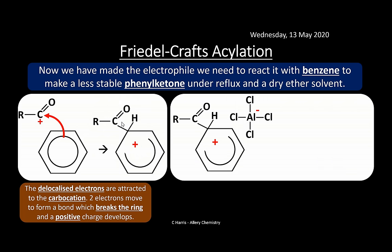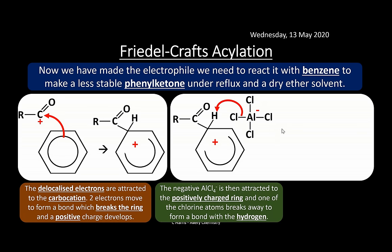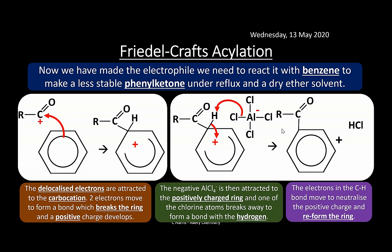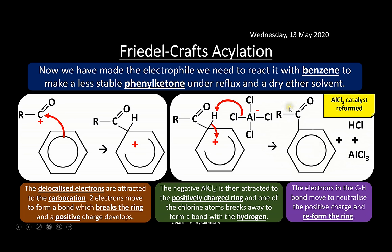The AlCl₄⁻ halogen carrier is attracted to the positively charged ring intermediate. A chlorine atom breaks away to form a bond with the hydrogen, and the electrons from that C–H bond move back into the ring to reform the delocalized structure — producing the phenyl ketone product. The AlCl₃ catalyst is regenerated, and hydrogen chloride gas is released as a byproduct.